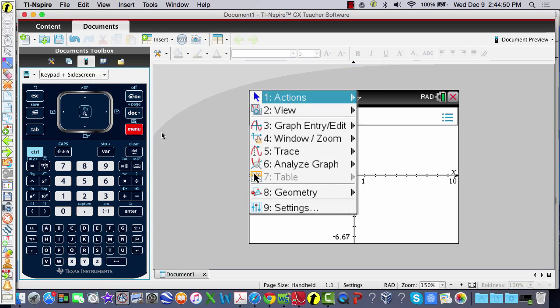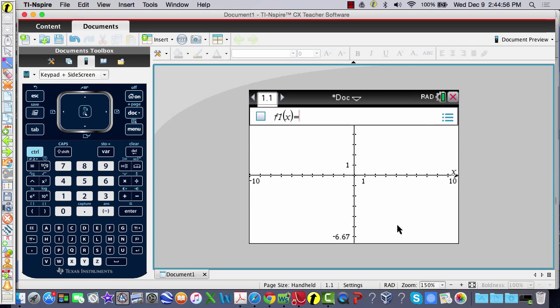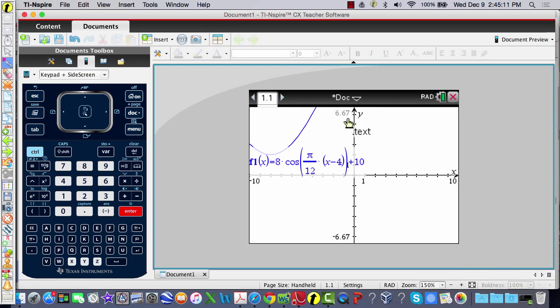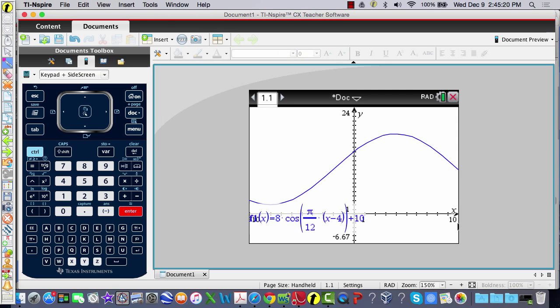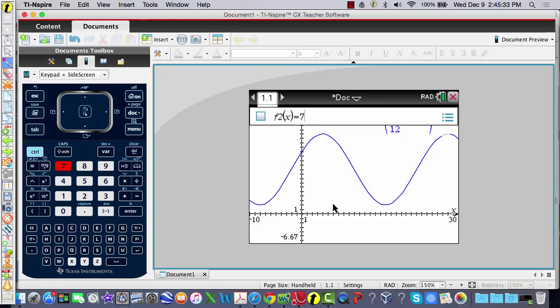I need a graph. I'm going to go to menu, make sure my settings, my graphing angle is in radians. Make sure you do that. So, what do I have? 8 cosine pi over 12 times x minus 4 with a vertical shift of 10. And I need to see this a little bit more. So, I'll go up to 24. And then I'll go out here. The period was 24, so maybe I'll go out to 30. And so, I need to graph f of x equals 7. Tab. 7.